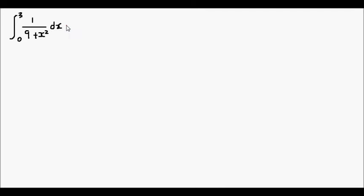I'm going to rewrite this integral a little bit. So I'm going to go from 0 to 3, integrate from 0 to 3 of 1 over 3 squared. Instead of writing 9, I'm going to write 3 squared plus x squared dx.